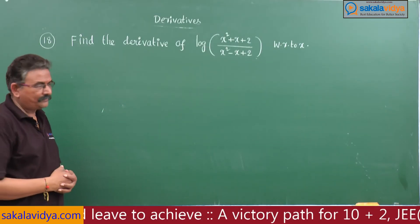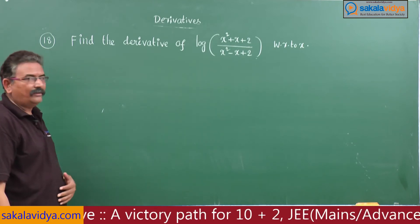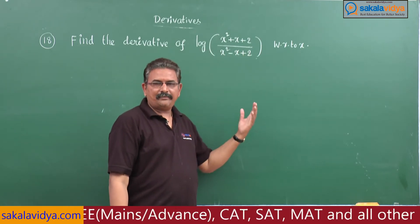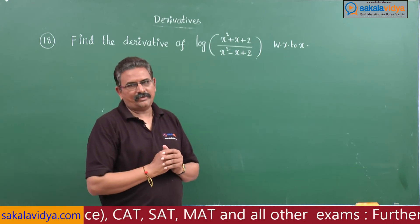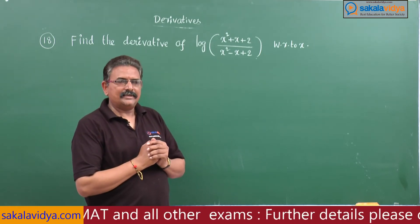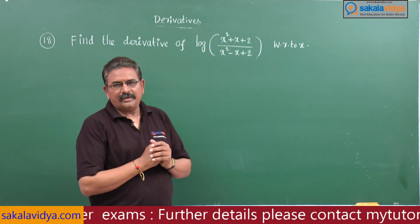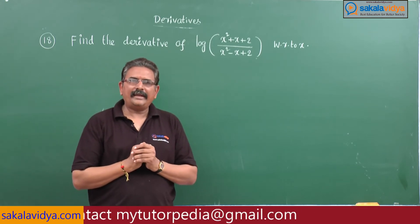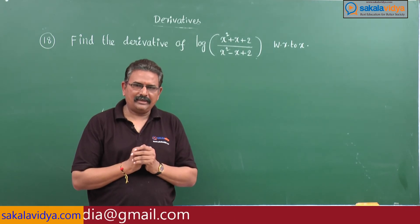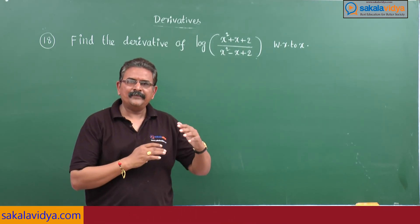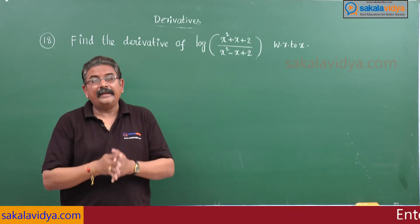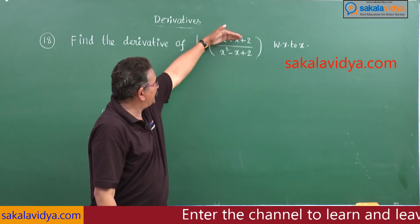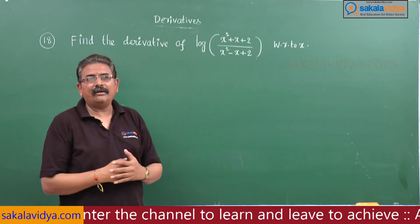Now let me read the next question. Find the derivative of log of (x square plus x plus 2) divided by (x square minus x plus 2) with respect to x. First let us discuss the strategy to solve this problem. We have to apply the logarithmic rule — the coefficient rule — log of (x/y) is log x minus log y. That means the given problem can be put as the difference of two functions using logarithmic laws.